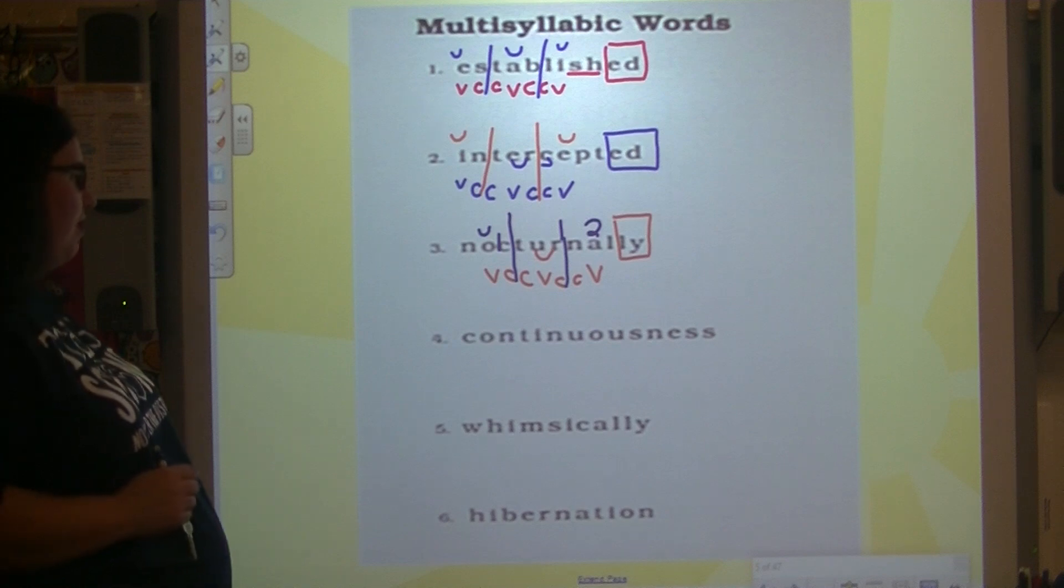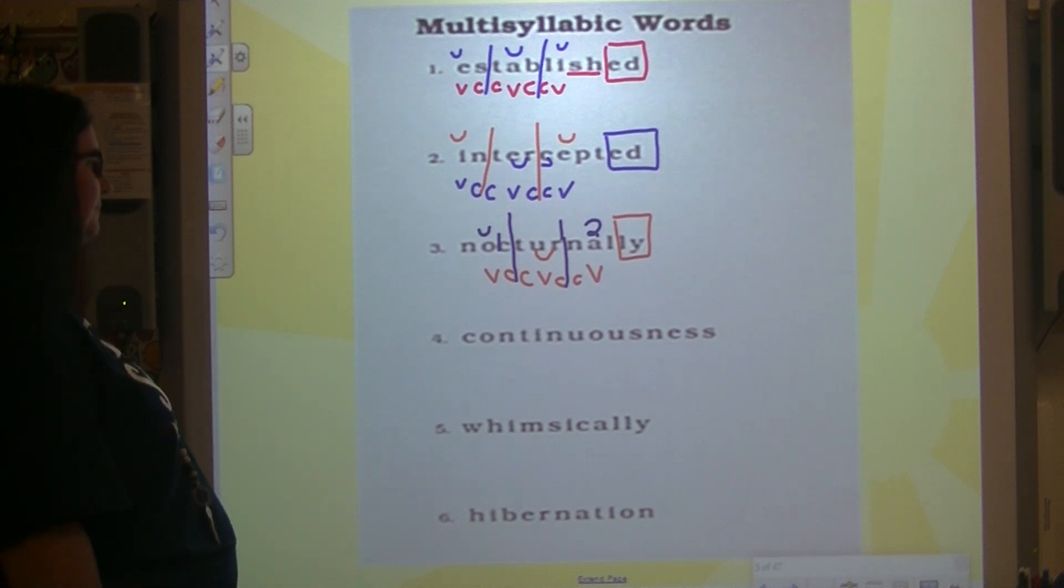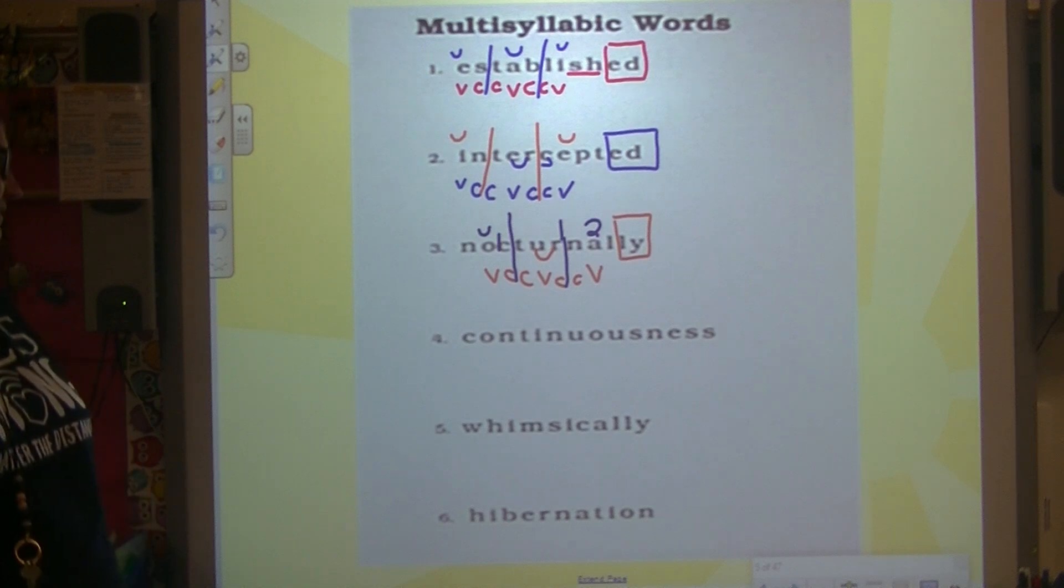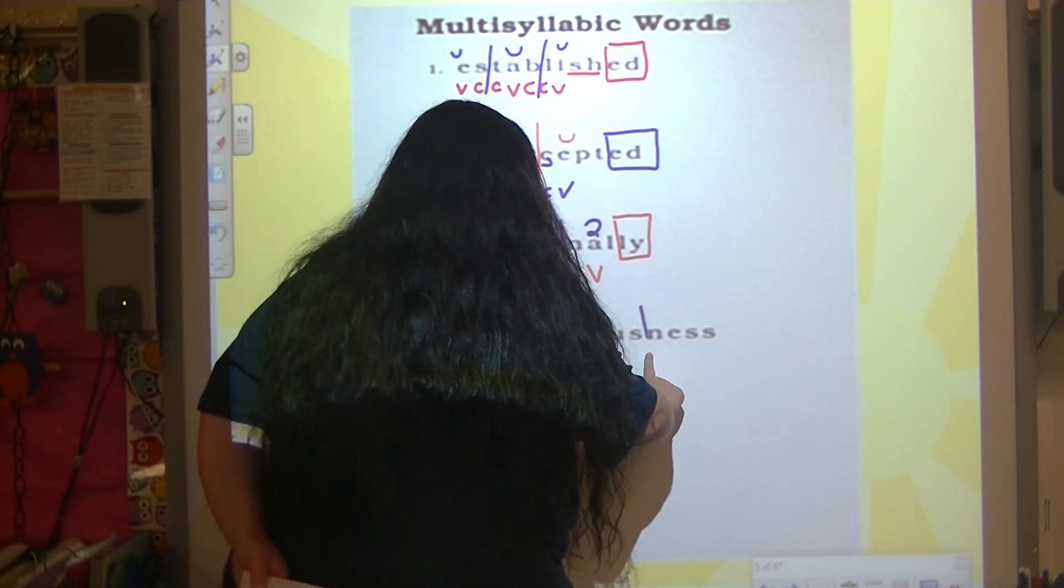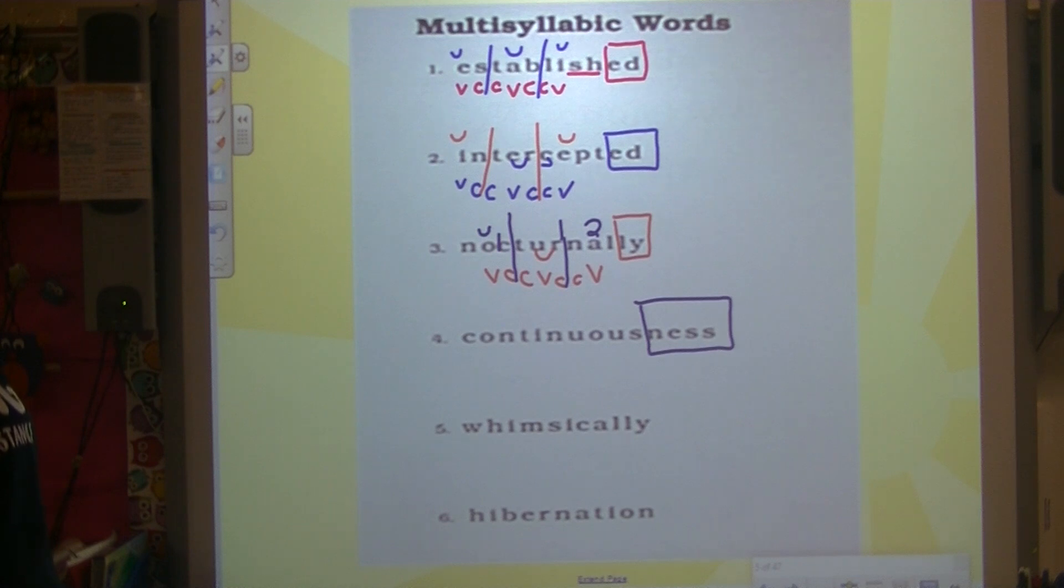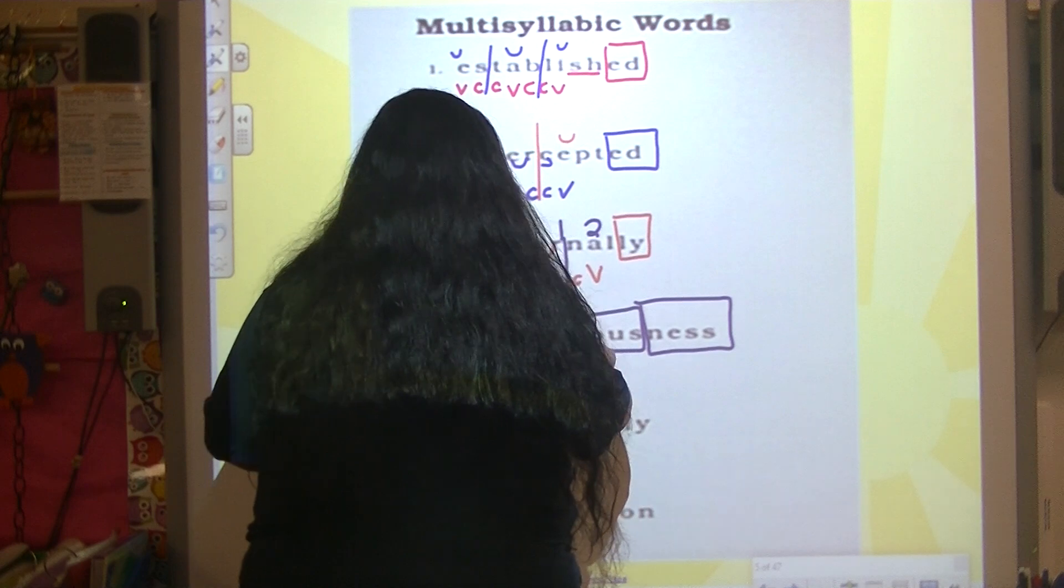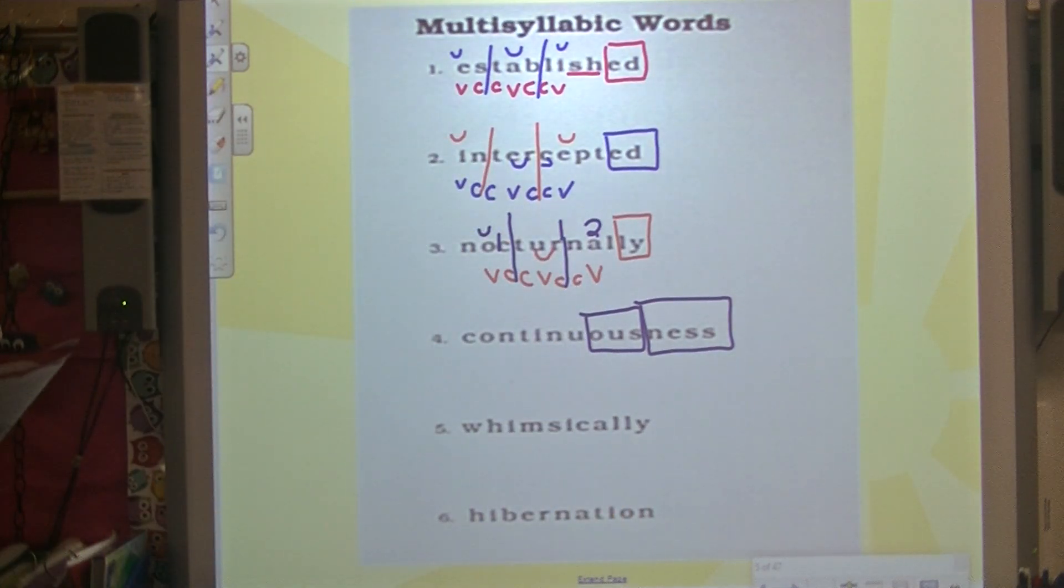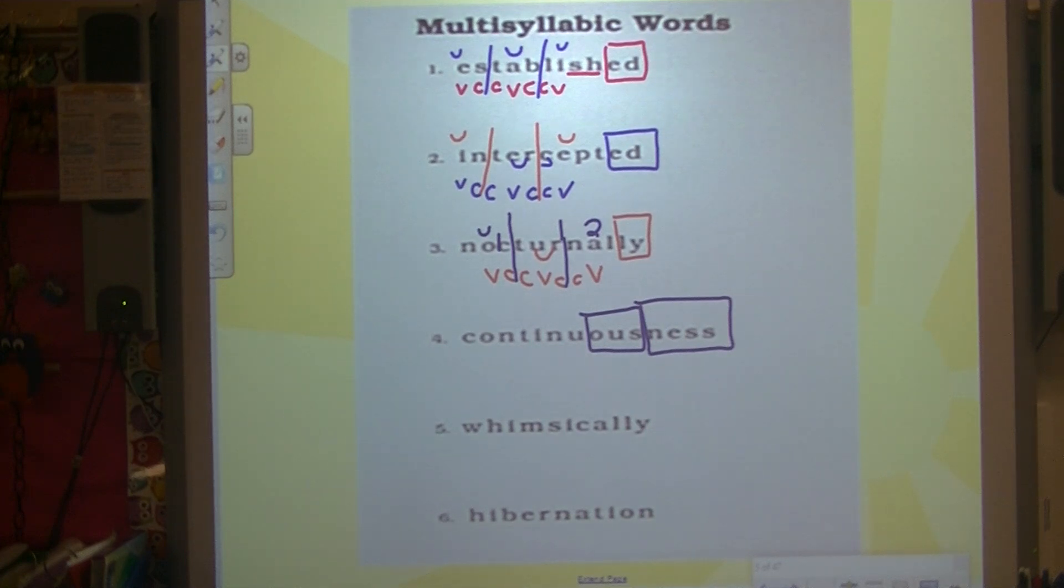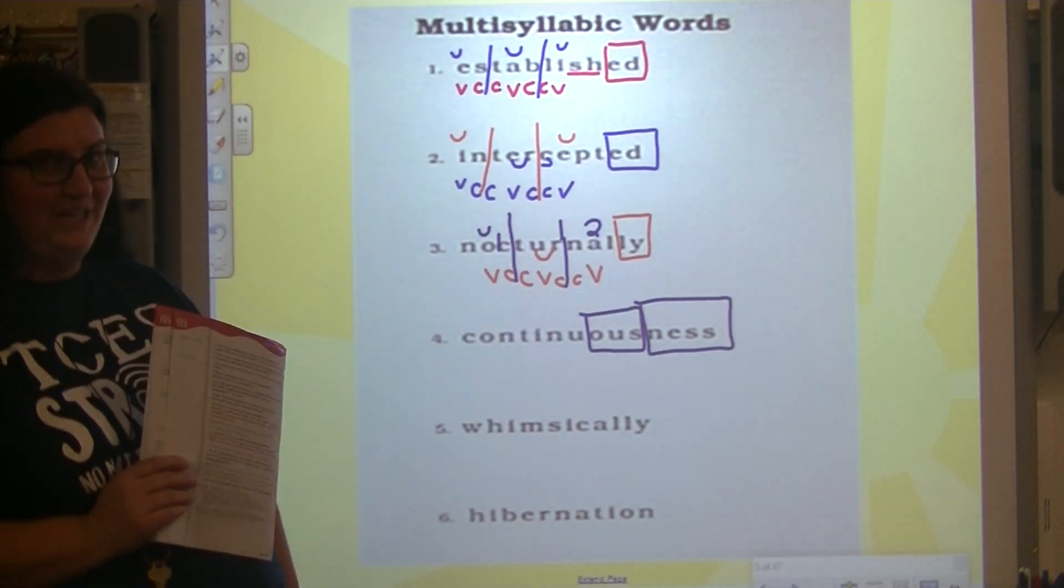Alright, number four. Do we see a suffix or a final stable syllable? We have a suffix. What is it? Ness. Alright, what else? What else do you see, guys? O-U-S. That means full of. There are two in there. They had to drop the final E to add that suffix. That's why it looks funny.